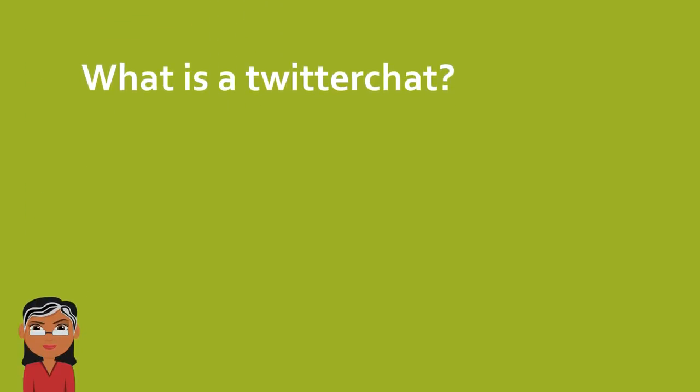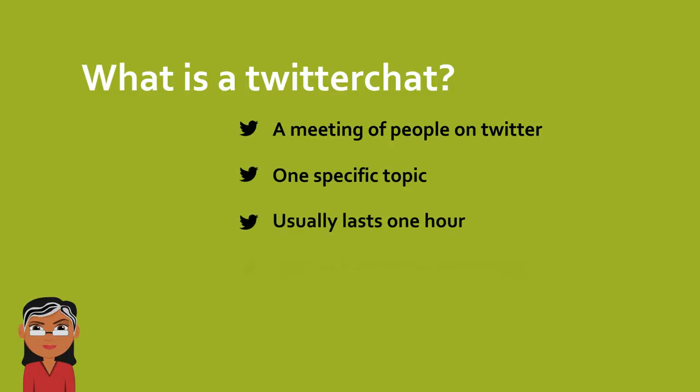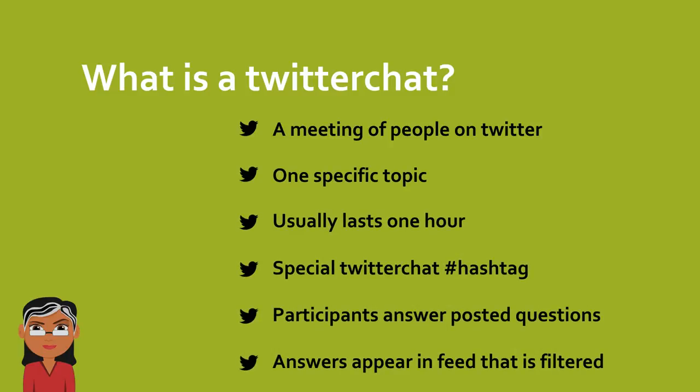What is a Twitter chat? It's when people meet on Twitter to discuss a certain topic. The chat itself lasts usually one hour, and people are not really chatting with their voice, but they're chatting with tweets, which means that you write your answers, comments, questions, and you use a special hashtag for this Twitter chat. The answers, comments, or responses of the participants are seen in a filtered feed, like a news feed.